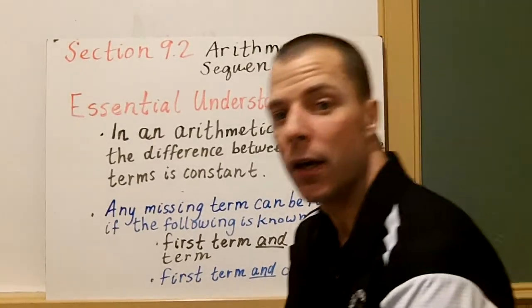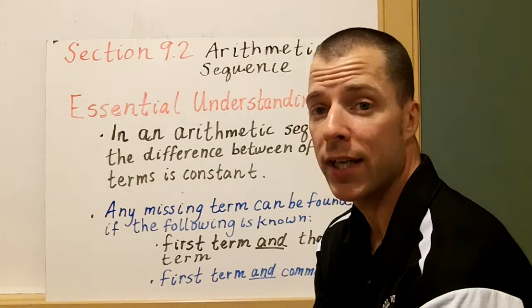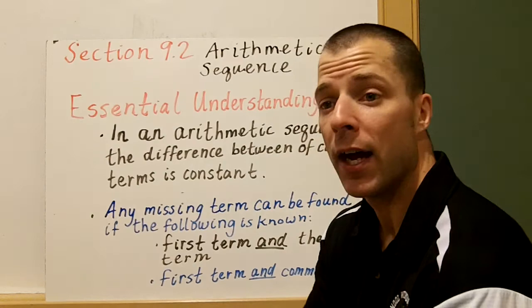Welcome to section 9.2. Today we're going to talk about arithmetic sequences. This is the second section of chapter 9. In 9.1 we looked at specific patterns of sequences, but there are really two sequences we can look at: one is called arithmetic and the other is geometric. Arithmetic sequences talk about having a common difference between two terms, and we're going to look at that today.